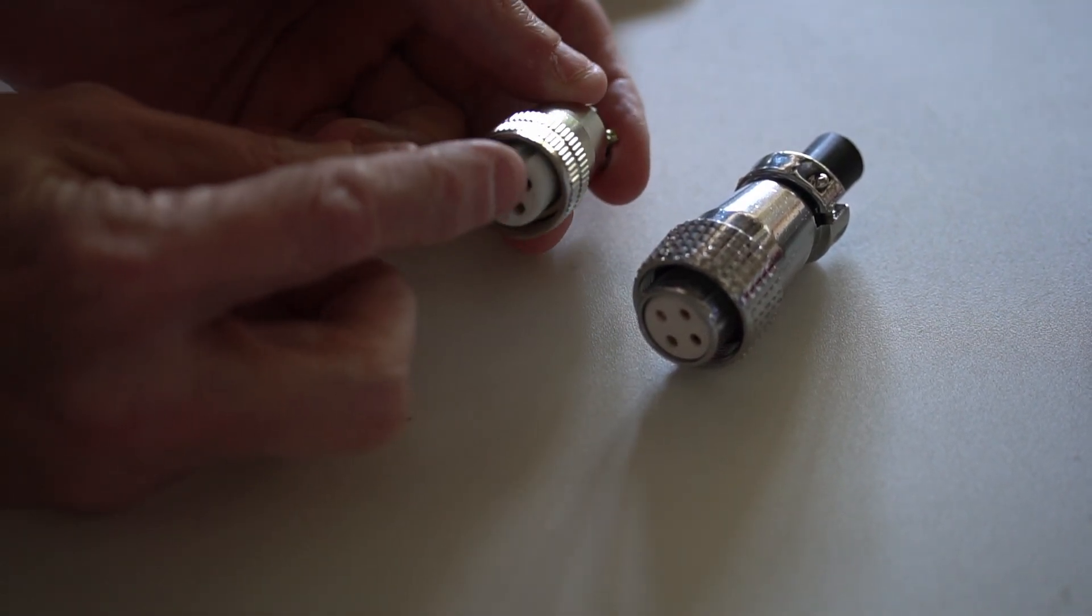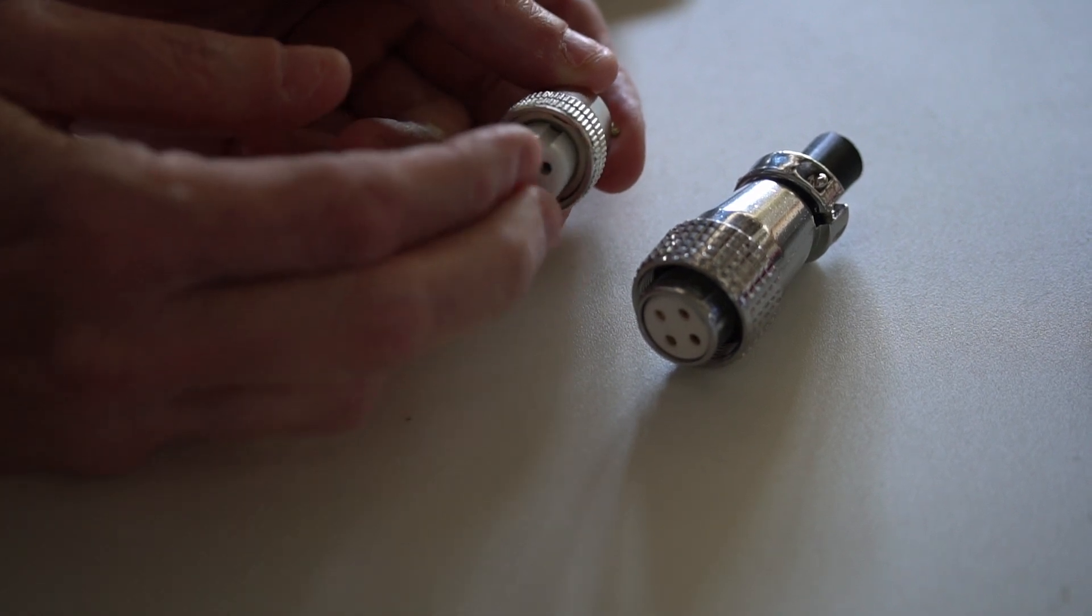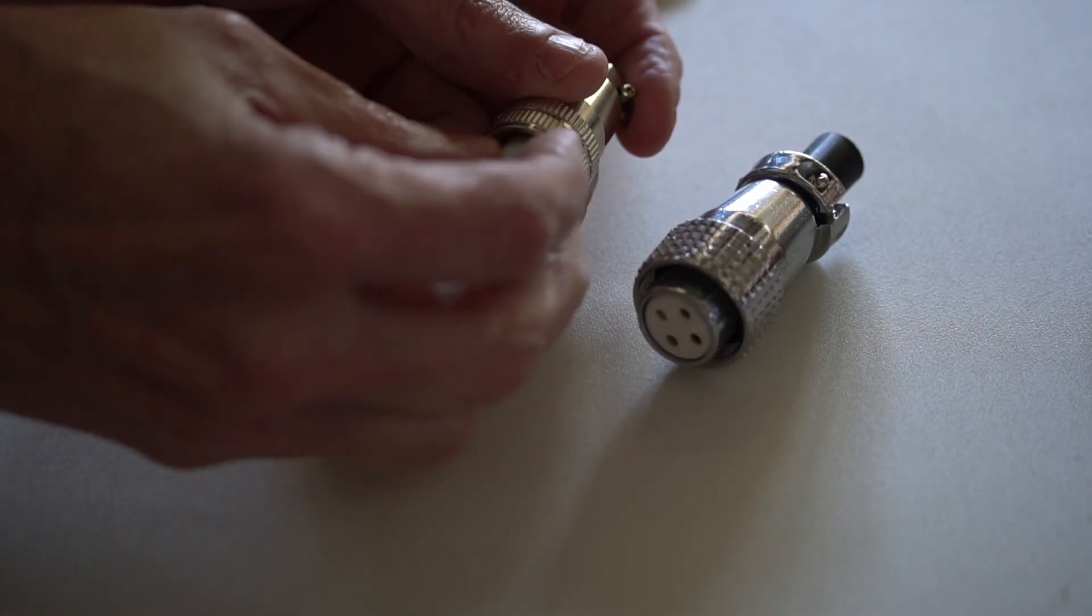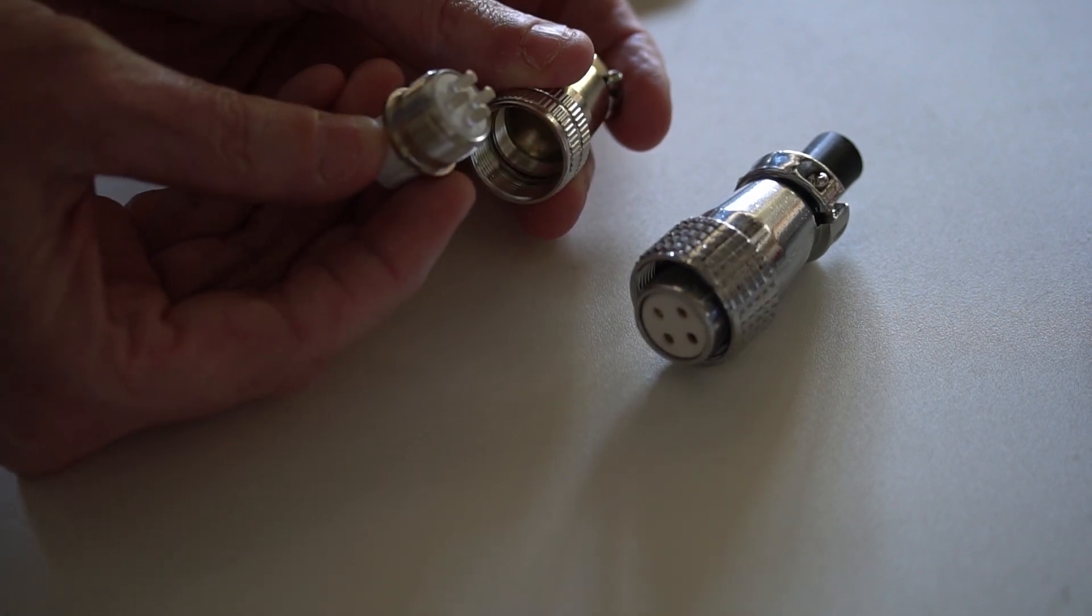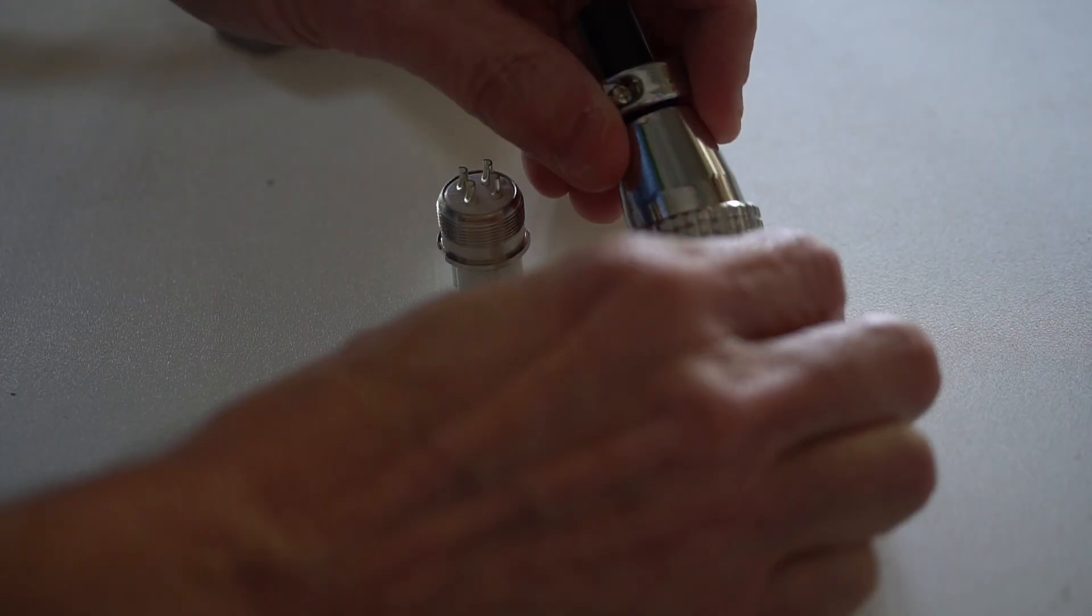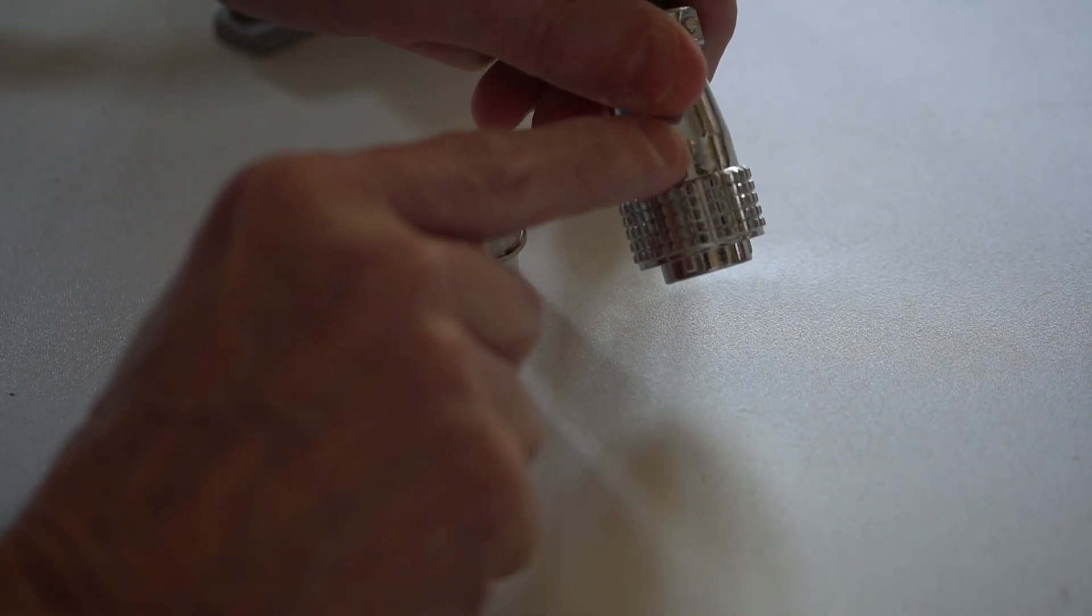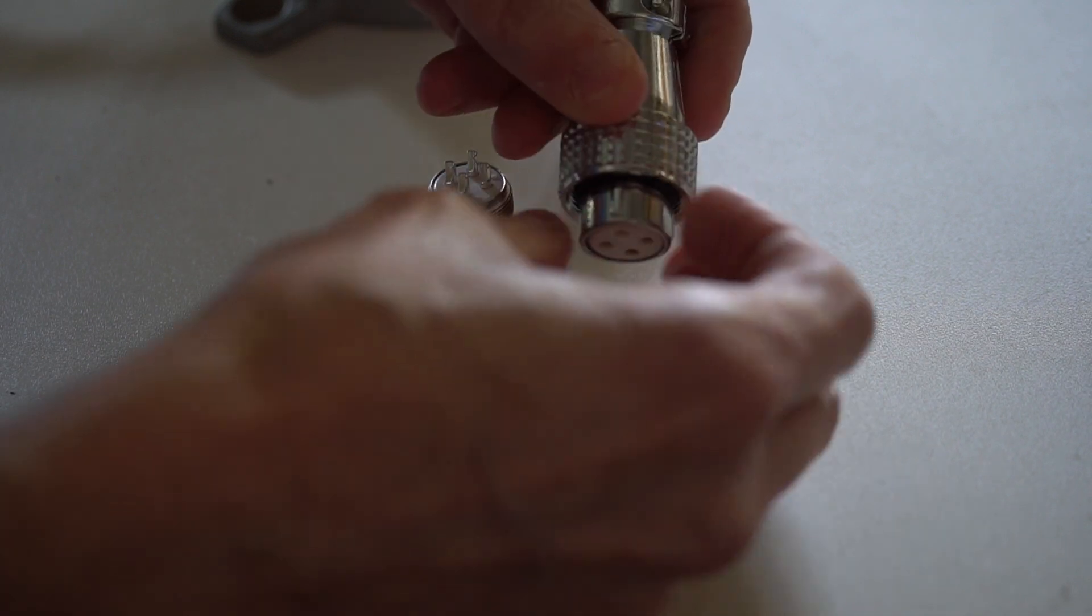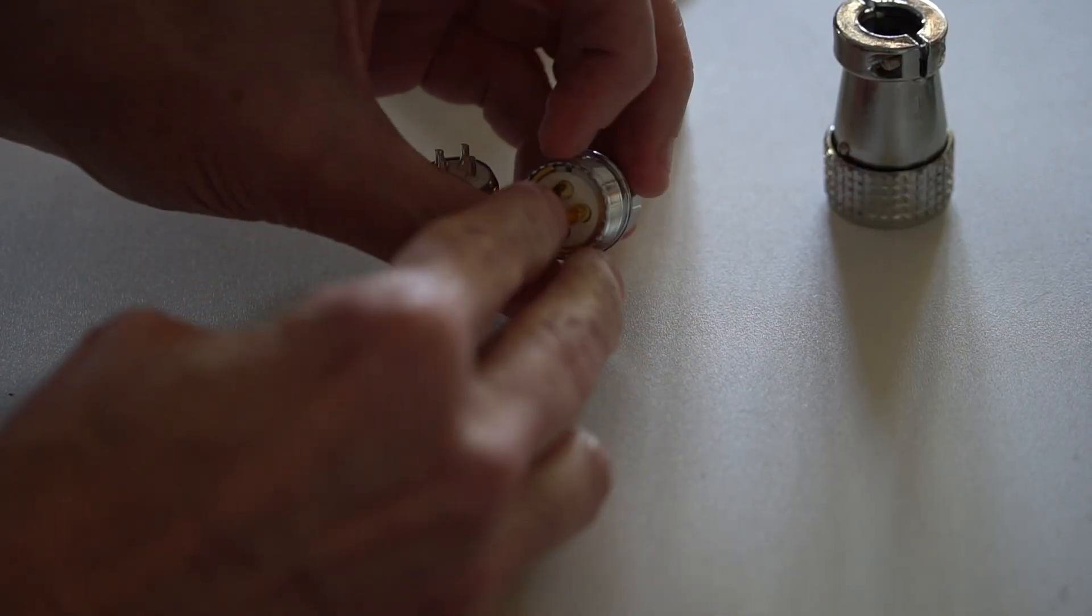For both of them, to remove this portion of the connector so you'll be able to solder the conductors of a cable into this connector, you're just going to unscrew this portion here, and it will reveal the solder cups inside. That goes for this one as well.